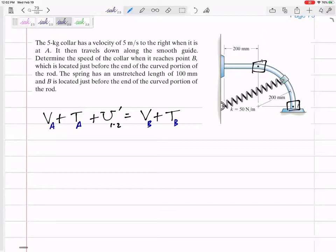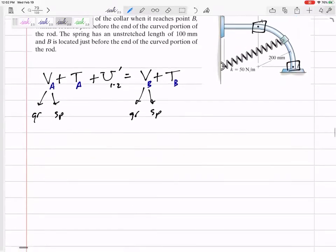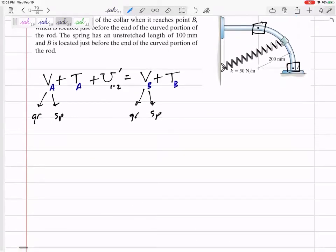So this potential energy could be both gravity and spring. This potential energy, both gravity and spring. So don't forget both of those. Now, some of these might be zero. Maybe you could go ahead and mark them zero right now. But I like to go ahead and write out the whole MGH plus 1⁄2 KX squared.